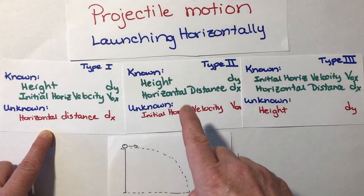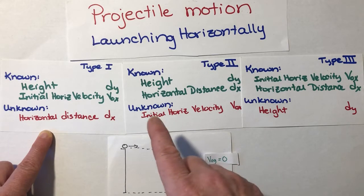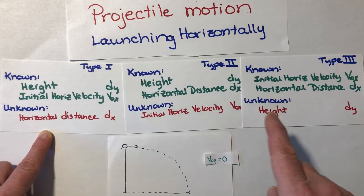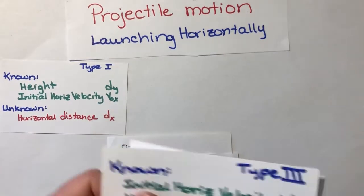In a future video, we're going to talk about type 2, which is where I know the height and the horizontal distance, but I don't know how quickly it was launched horizontally. And type 3, where I know the initial horizontal velocity and the horizontal distance, but I don't know the height of my cliff. We'll address those in future videos.